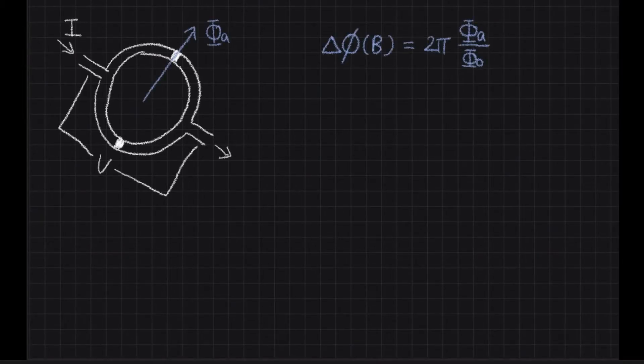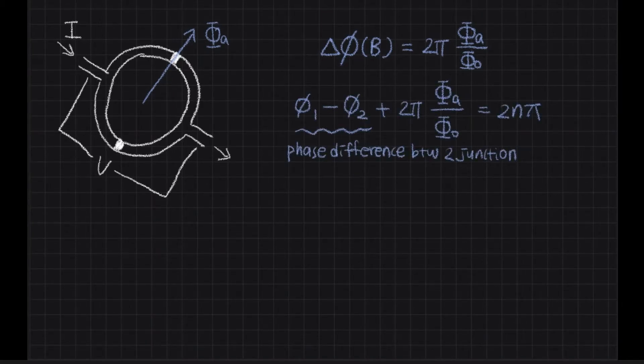The magnetic field changes in the ring produce the following phase change. And we can establish a relation for total phase. φ1 minus φ2 is the phase between two junctions, and the total phase is limited by 2π.